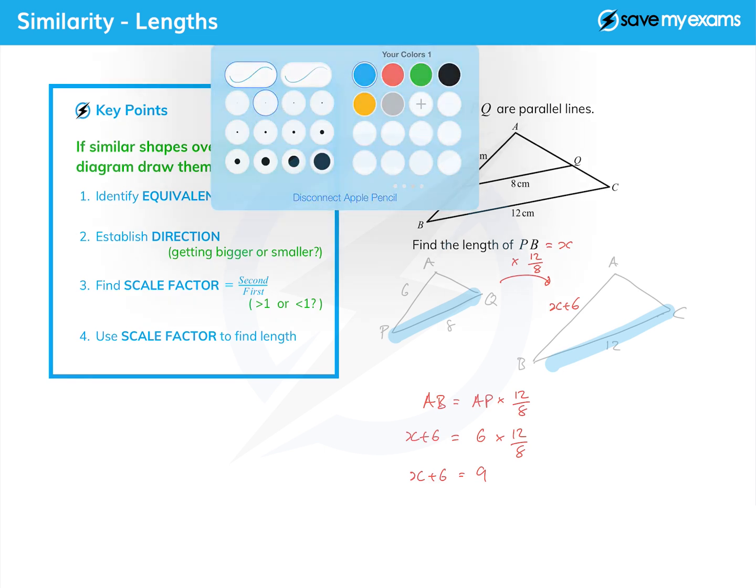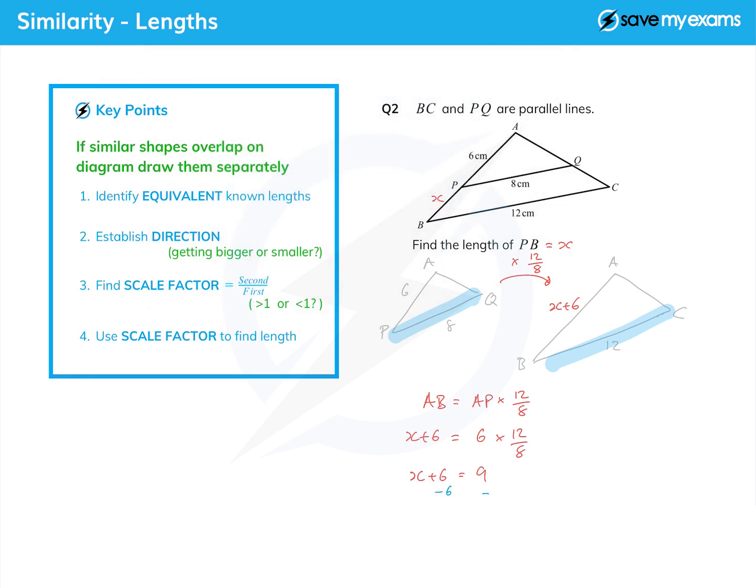Then we can simply subtract 6 from both sides and get X equals 3, which is of course equal to PB and we're done. So by some careful labeling of the sides, separating the diagrams out, and following our basic rules for scale factors, we have done a difficult question.